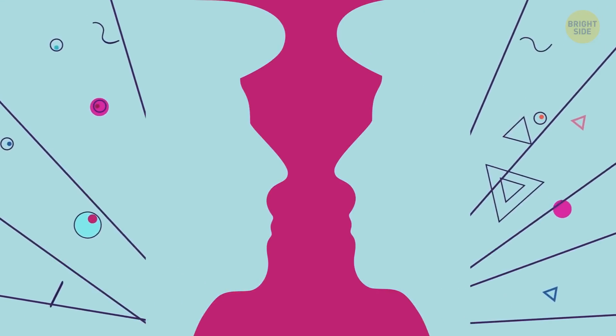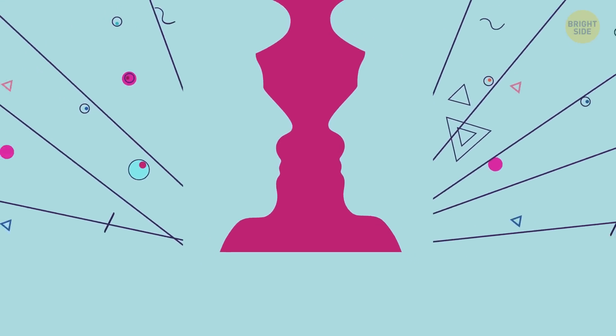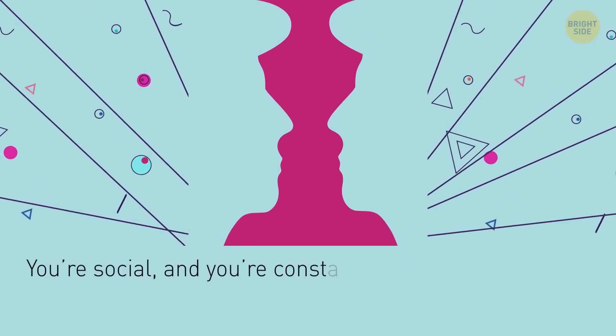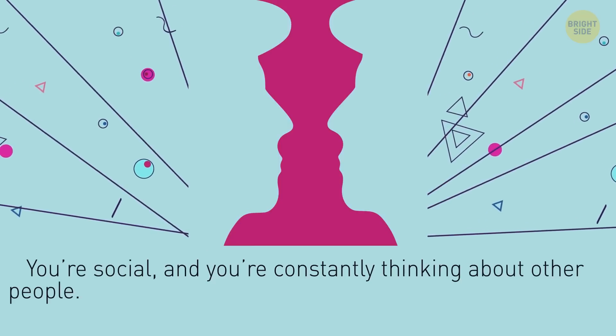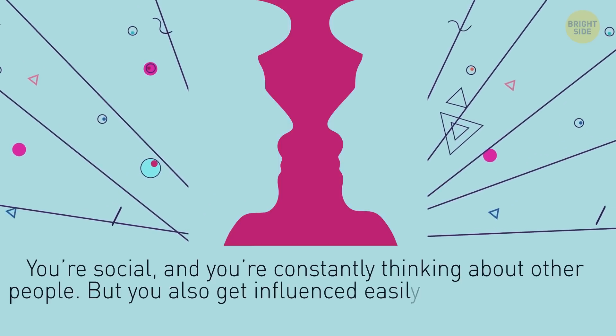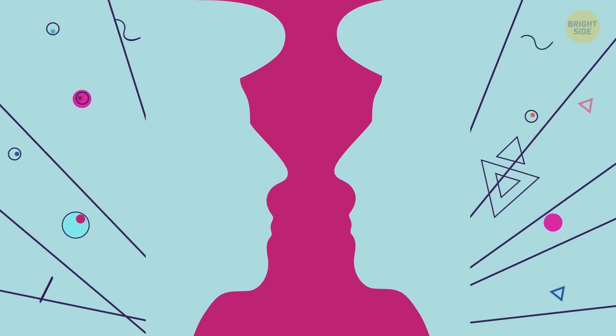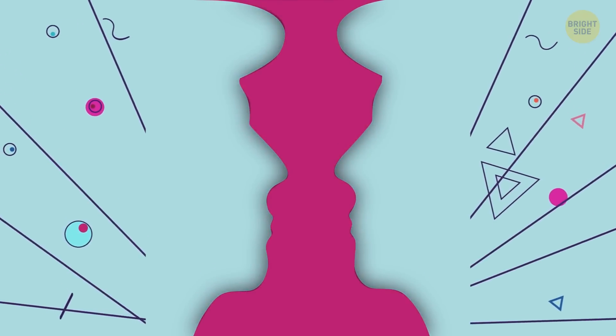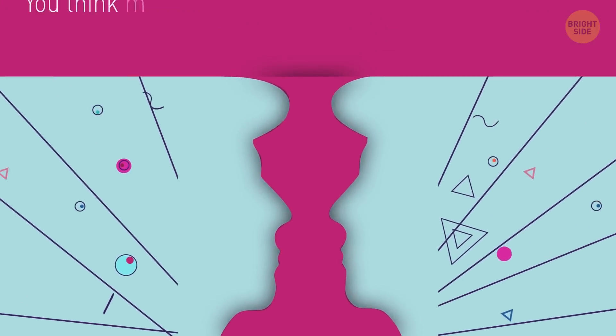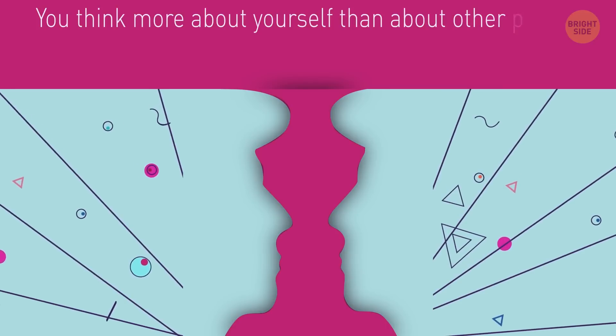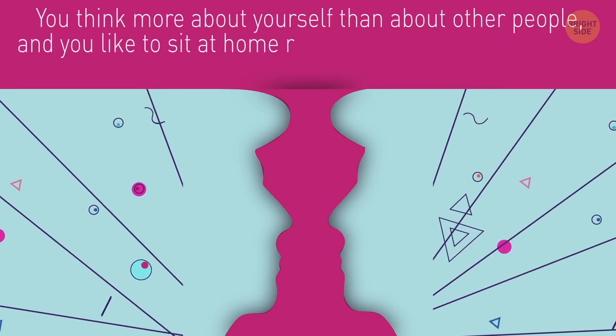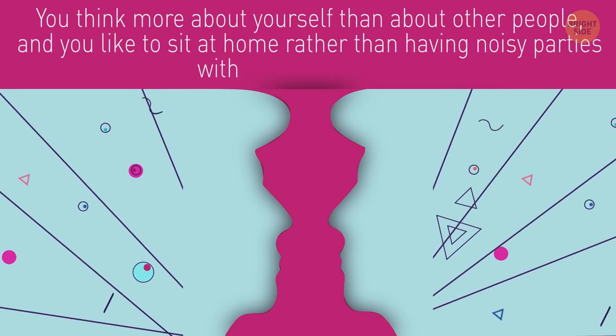Hey, did you see two faces here? You're an extrovert. You're social, and you're constantly thinking about other people. But you also get influenced easily. So try to surround yourself only with good people. But if you see a candlestick here, you're the exact opposite. You think more about yourself than about other people, and you like to sit at home rather than having noisy parties with a bunch of people.